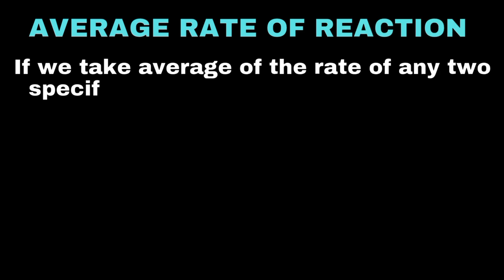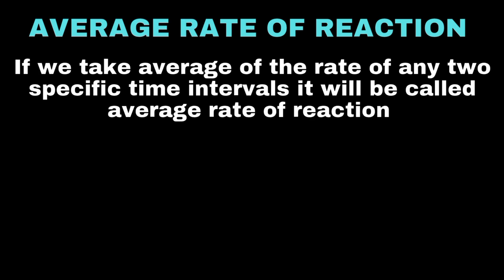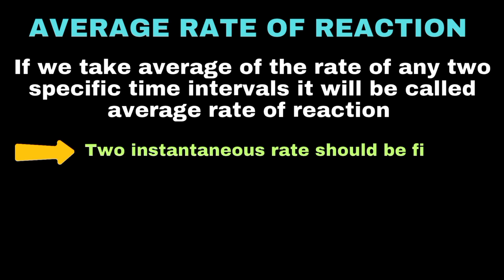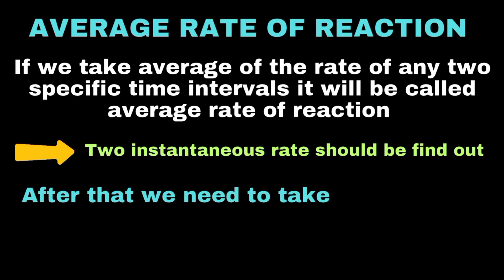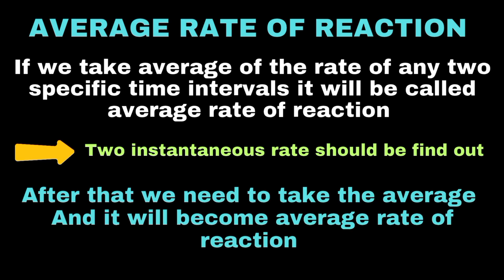The average rate of reaction is defined as the average of the rate at any two specific time intervals. To find the average rate of reaction, we first need to find the instantaneous rate of reaction for at least two time intervals, and then take the average of these two rates.